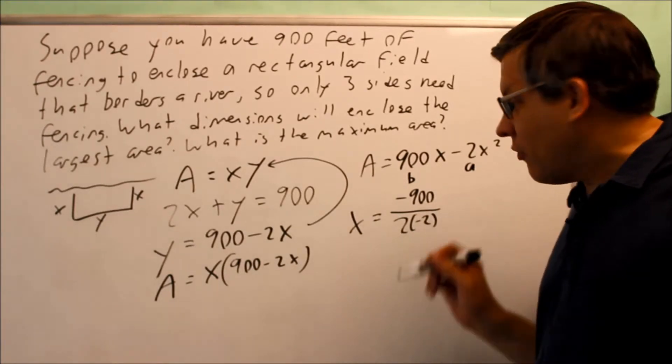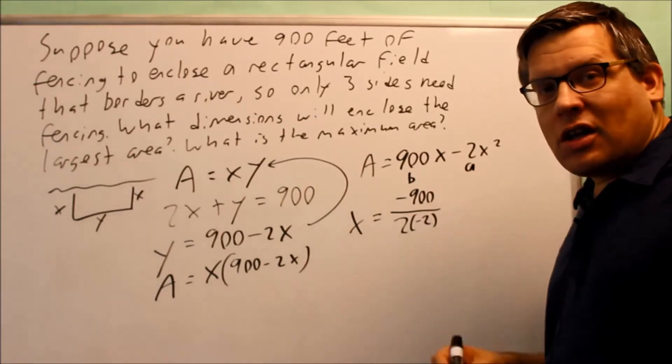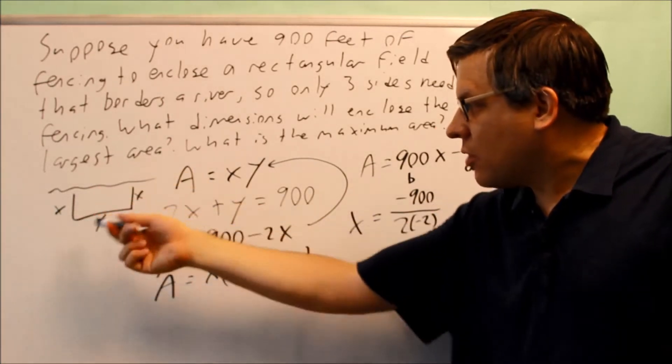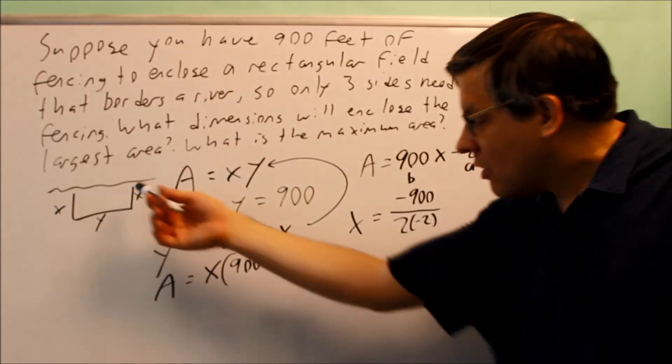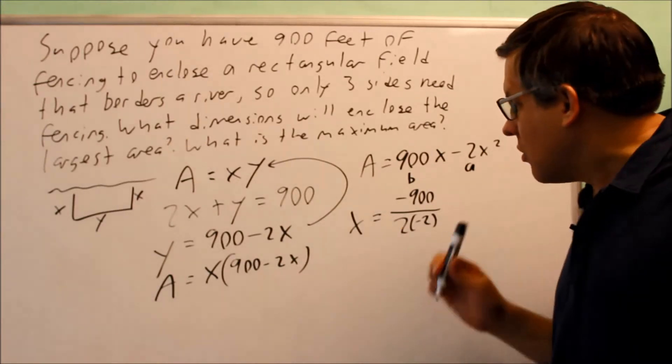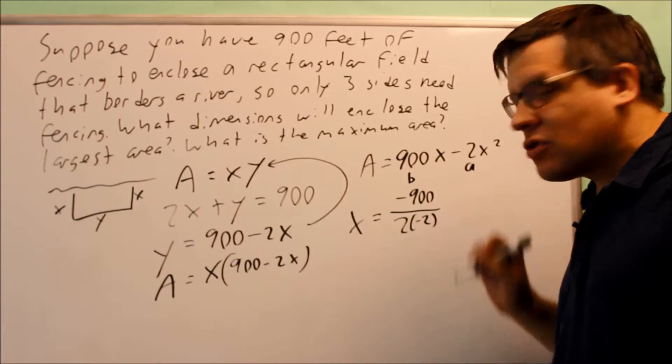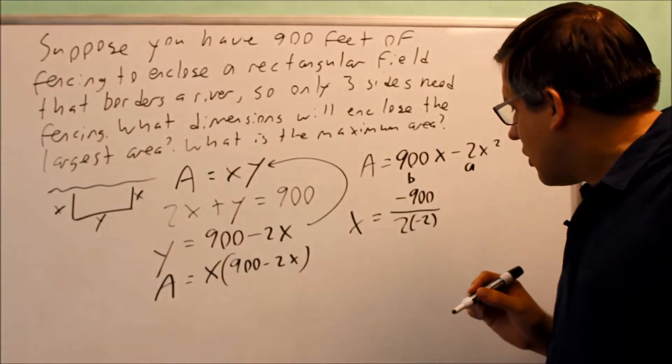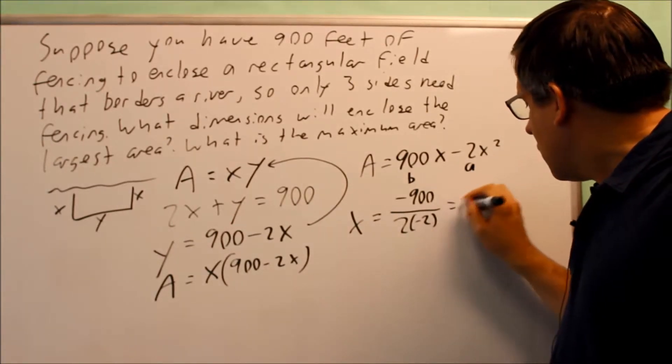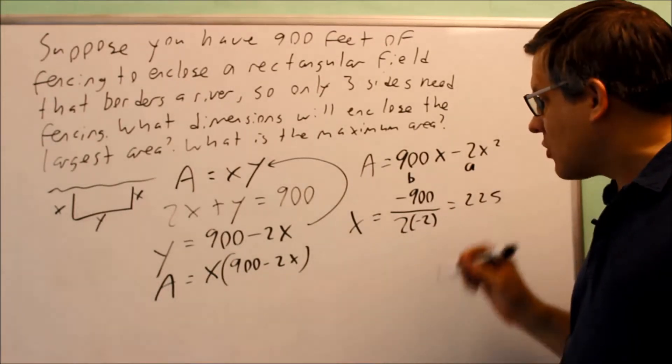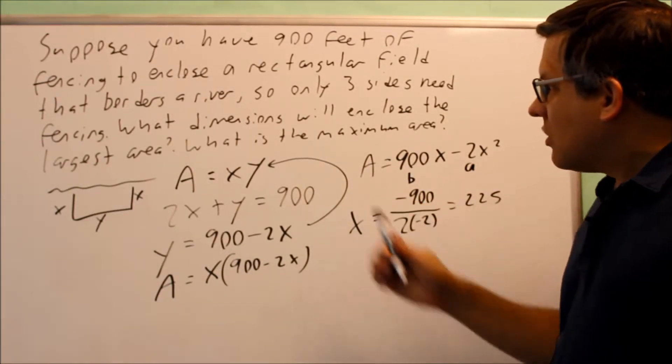I get x equals negative b over 2a, so I'm going to do negative 900 over 2 times negative 2. Notice that I get the two negatives in there—they're going to cancel. If you did this and ended up getting a negative answer, you want to go back and check because it's impossible for us to have a negative side. For this one, if you divide that, you're going to get 225.